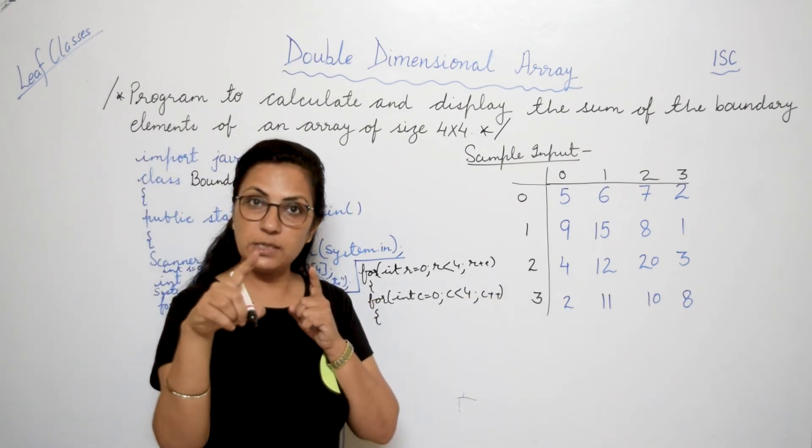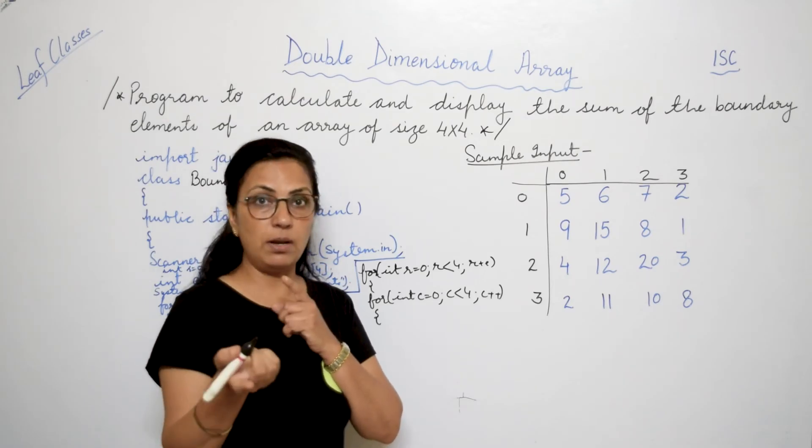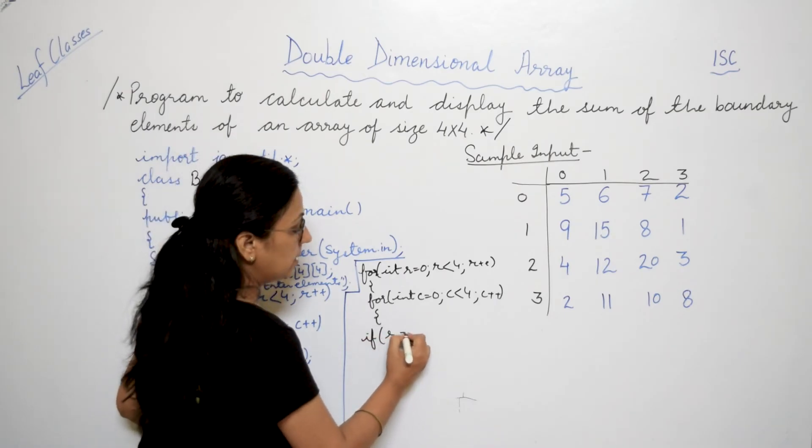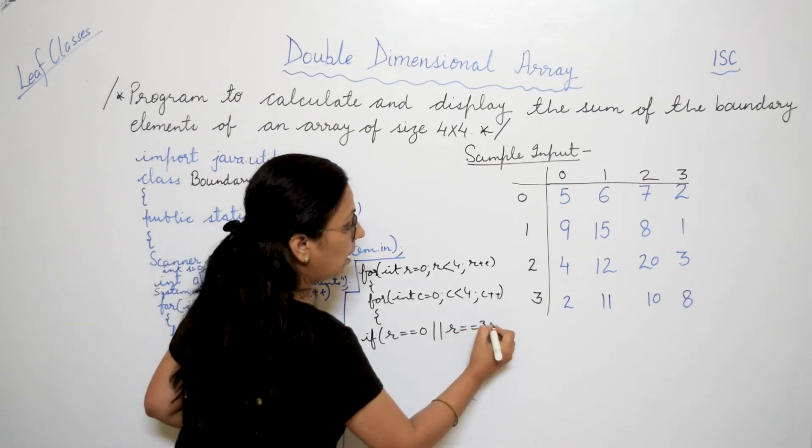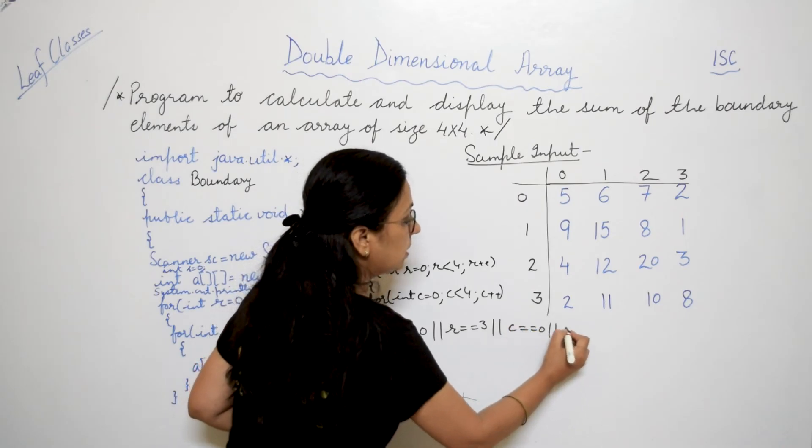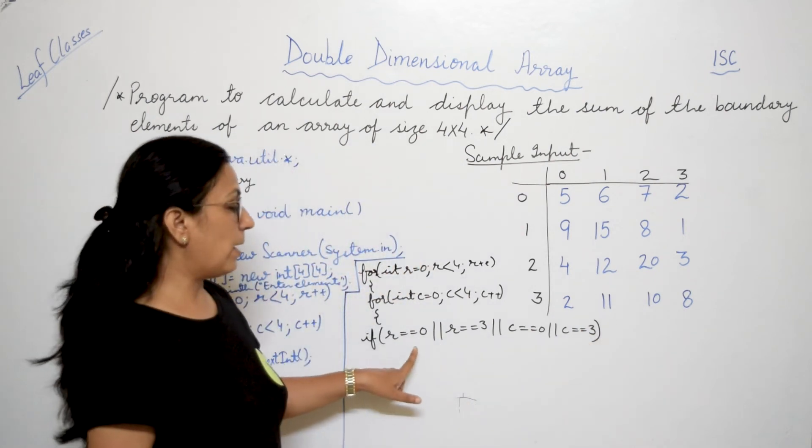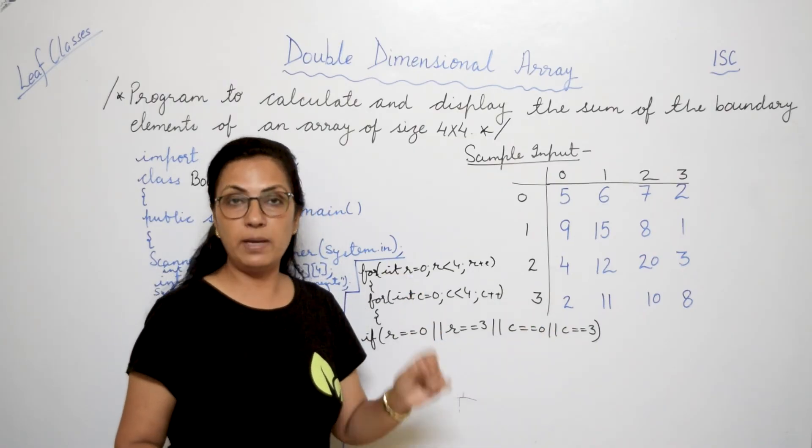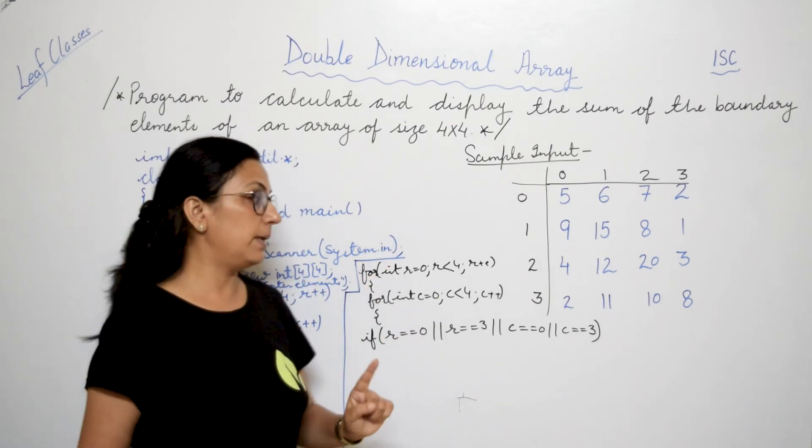Either row number is 0, or column number is 0, or row number is 3, or column number is 3. So just one condition is sufficient: if r is equals to 0 or r is equals to 3 or c is equals to 0 or c is equals to 3. Very simple, children. Either r's value is 0 or 3, column's value is 0 or 3. If any of these conditions is true, that means that element is our boundary element.